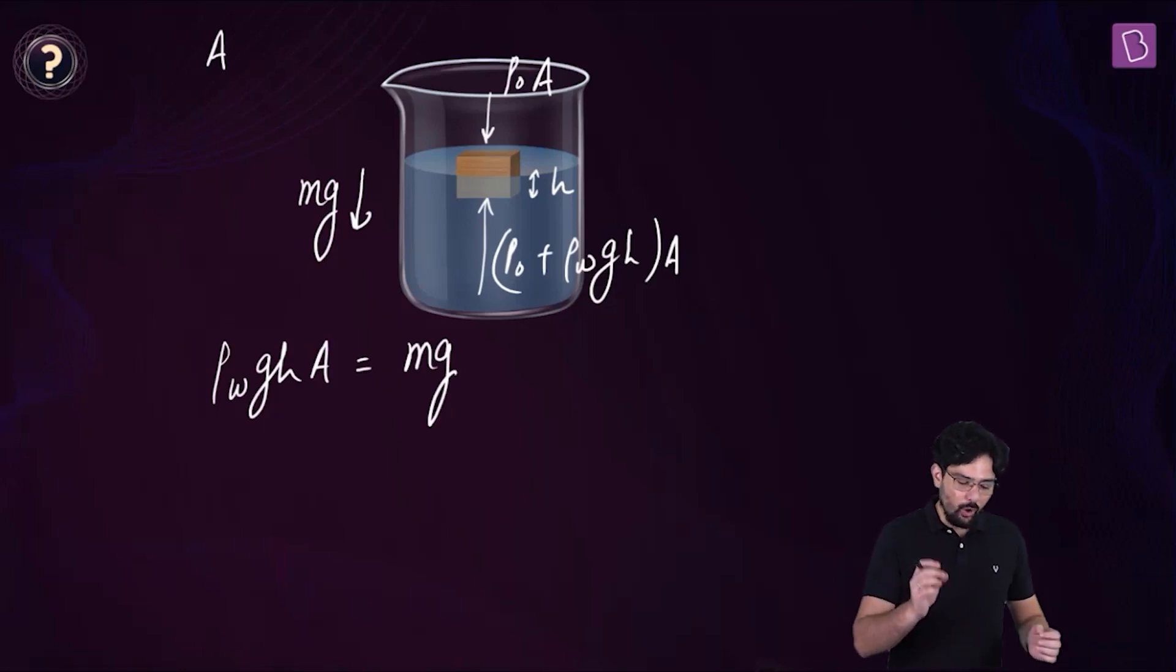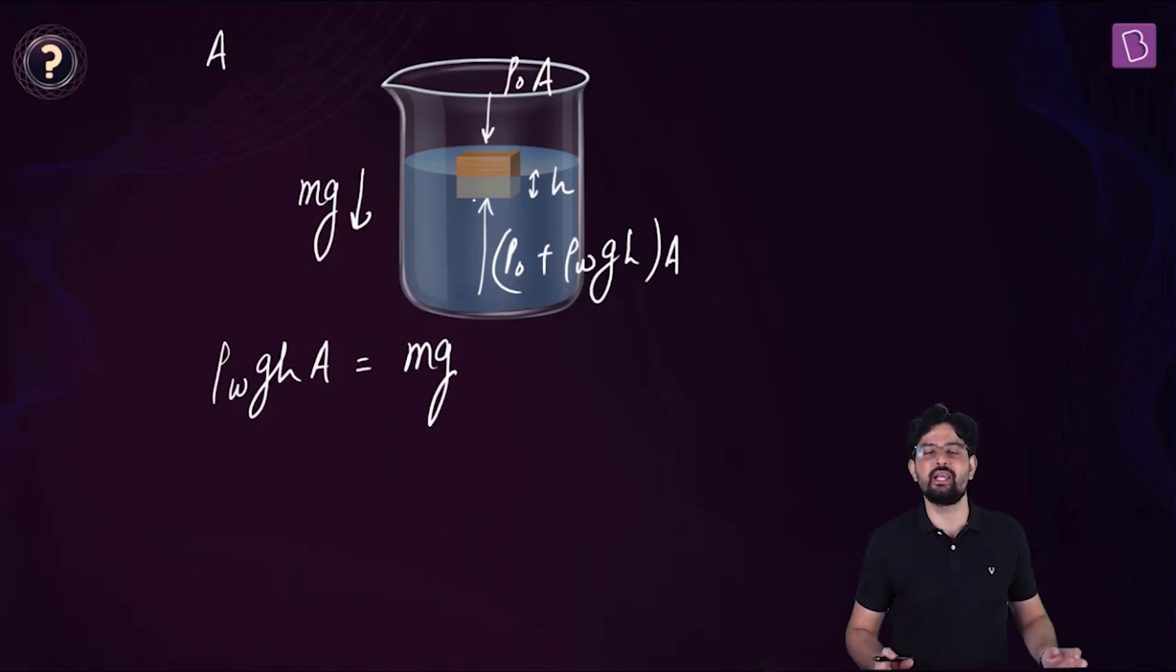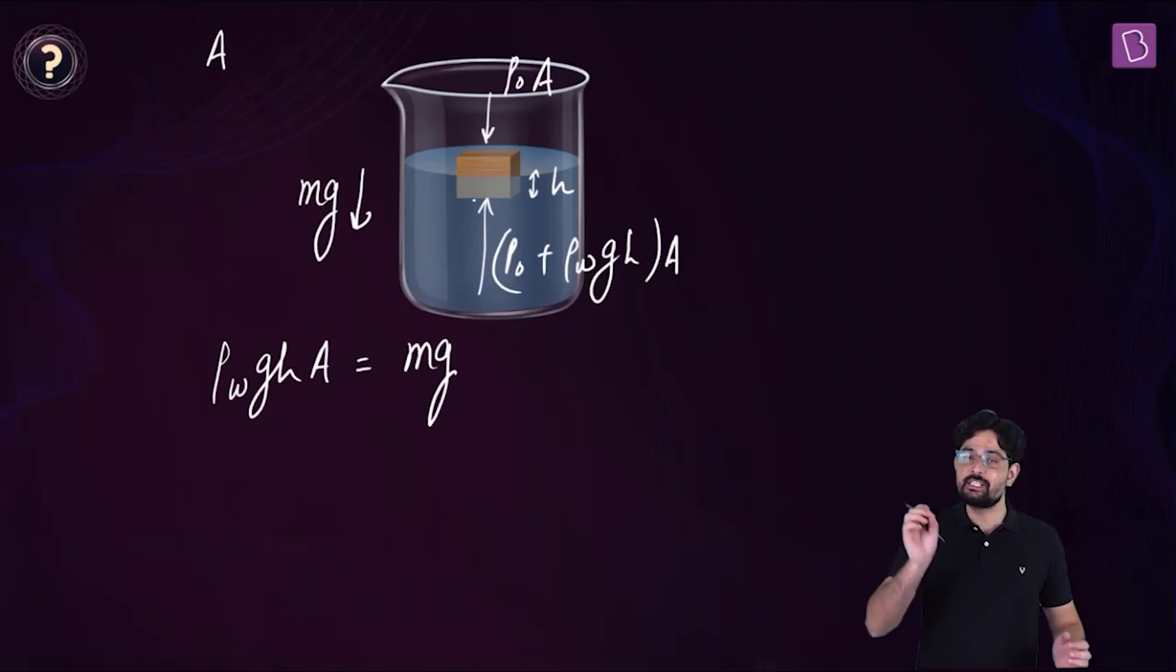Now, as the oil is poured, then don't you think due to the weight of the additional layer of oil, the pressure at this point is going to increase? And if the pressure increases, the force will increase. And there is going to be an upward additional force that will act on this object. And this is why this object is going to move up.